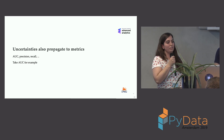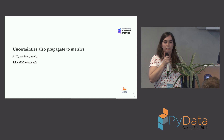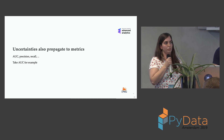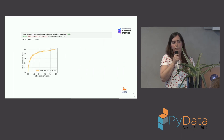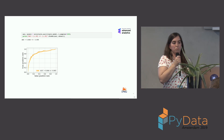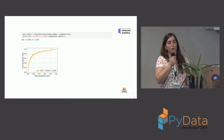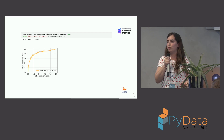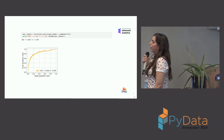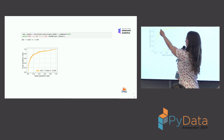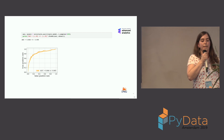These uncertainties do not only propagate to the predictions we make, but also to the metrics we use to determine how well our model is performing. Things like precision, recall, and AUC are all impacted by uncertainties from limited training data. For example, our model has an AUC of 0.84, which is pretty high — but it's important to also consider the uncertainty over this score, especially if your model is being used in a production environment. We also show an ROC curve with uncertainty bands on the true positive rate.